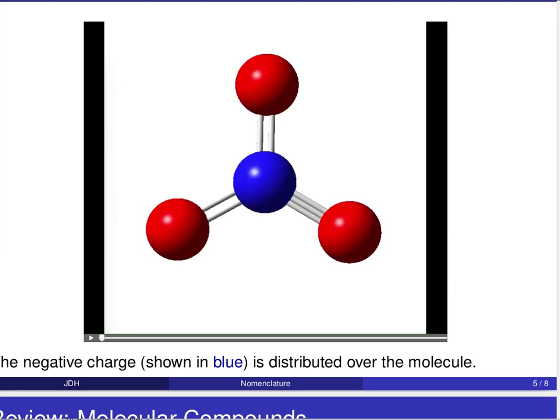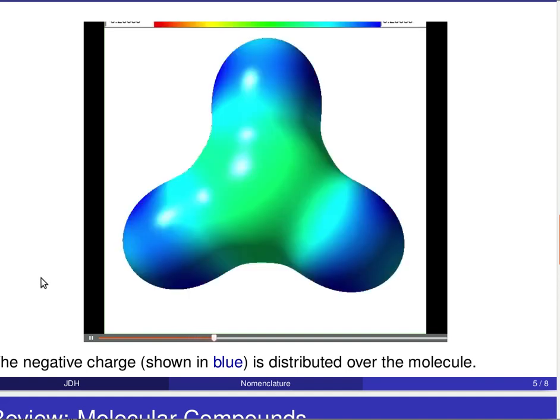So to do that, what I would like us to focus on is a computer representation of this NO3- molecule, where I'm using a blue sphere to represent nitrogen and the three red spheres to represent the oxygen atoms. And then what I'm going to do is use some computer techniques that uses an equation, a famous equation that we'll talk more about in the class, called Schrodinger's equation, that allows us to calculate where these electrons are found on the molecule.